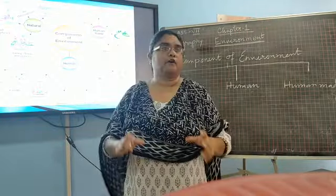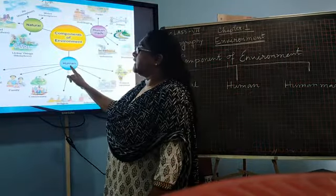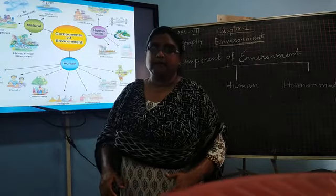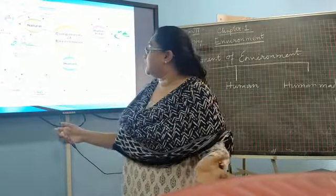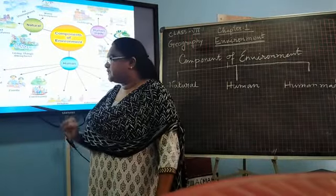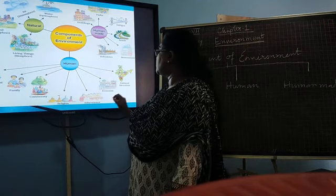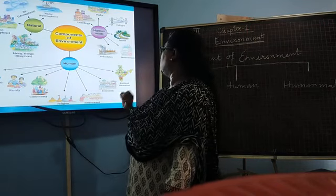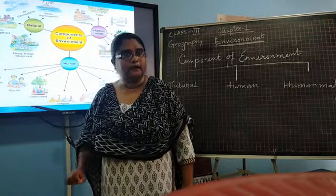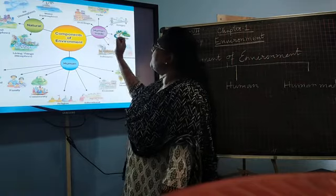Next, the human environment. Human environment consists of human beings — from individual to big community. Here we see individual, family, community, religion, educational institution, economics organization, and political situation — all are parts of human environment.